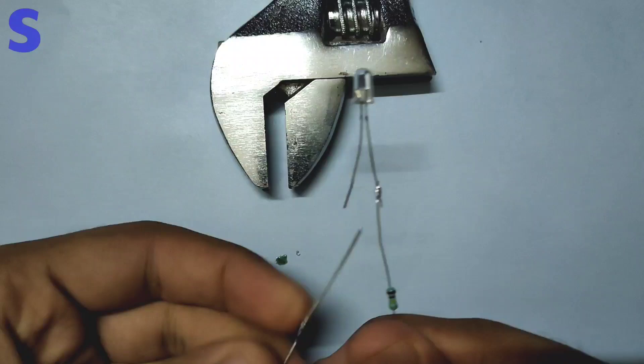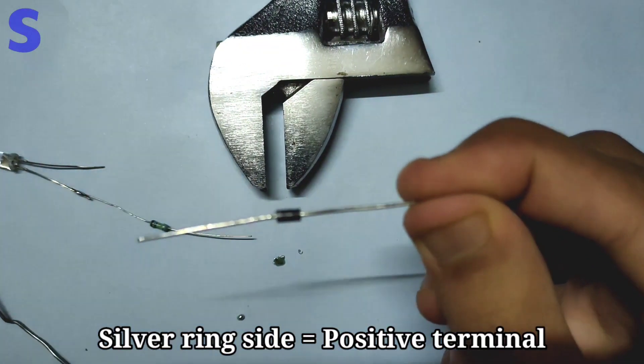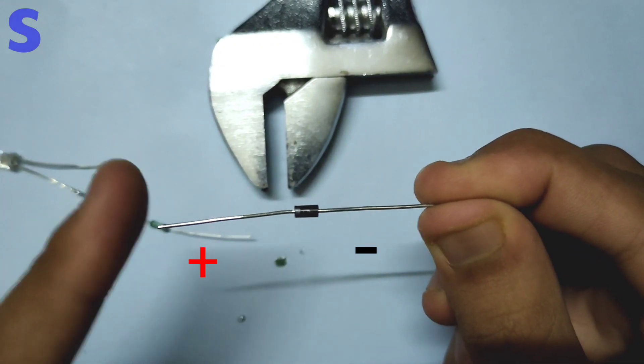Now take the 1N4007 diode. The side on which there is a silver ring is the positive terminal of the diode.